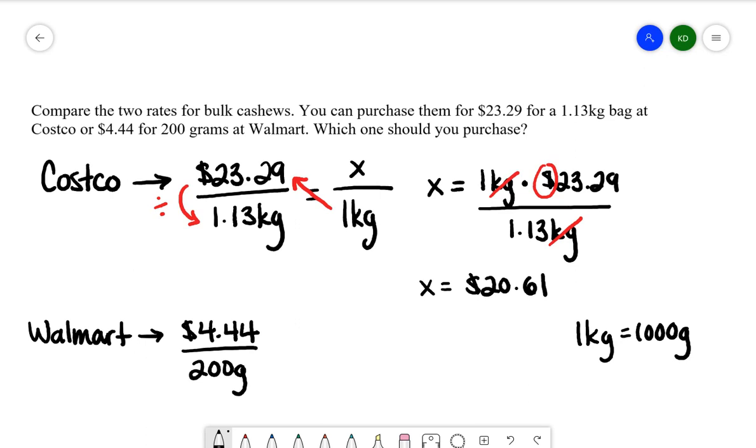If I can purchase 200 grams, instead of writing one kilogram in the denominator on this side, I need to write 1,000 grams instead. This is where I'm talking about we need to create equivalent fractions.